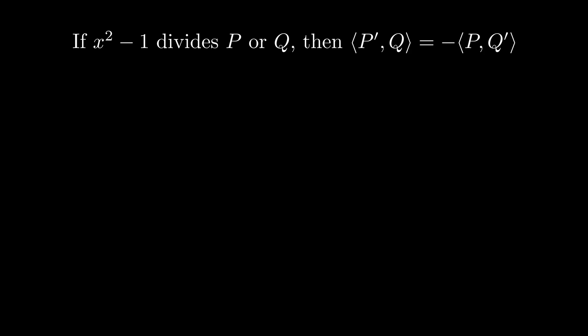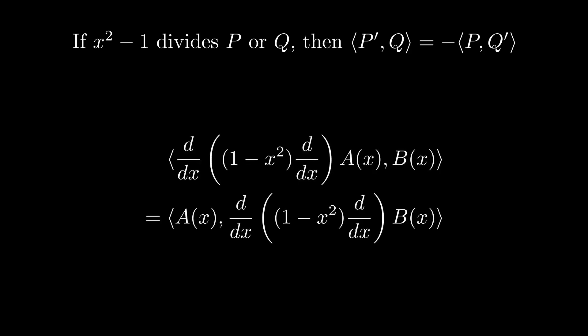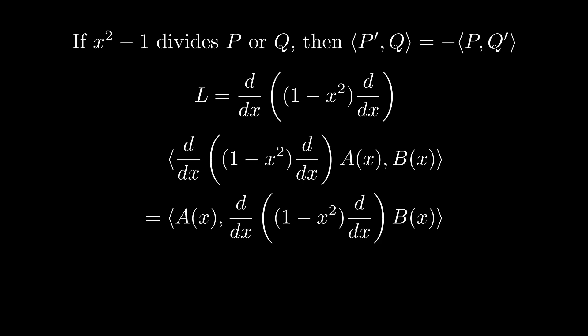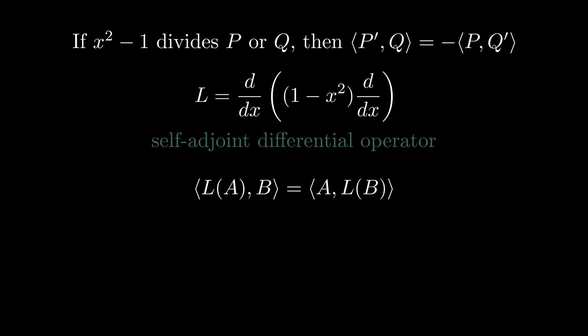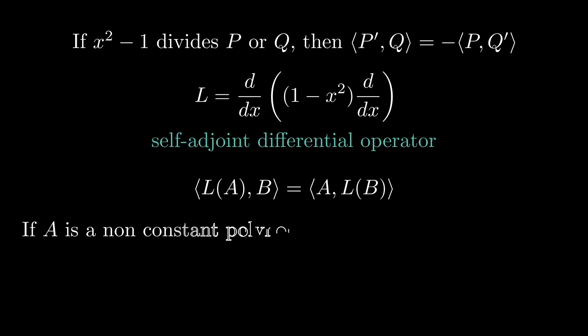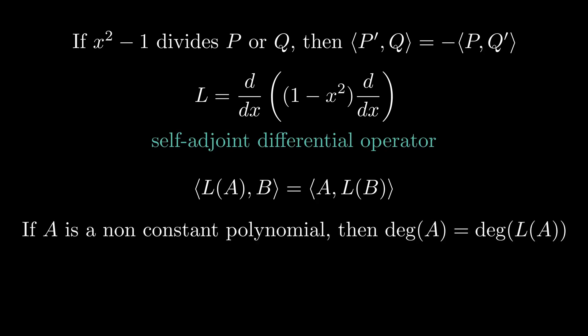Let's go back to our observation of the derivative in the inner product. If we differentiate, then multiply with 1 minus x squared, and then differentiate again, we are able to move the derivative twice. Let's call this operator L. L is a differential operator, so it takes one polynomial and returns another one. We have just shown that we can move L from one side to the other — operators with this property are called self-adjoint. When we pass a non-constant polynomial into L, we get a polynomial of the same degree, since differentiation lowers the degree by 1 and multiplication by 1 minus x squared increases the degree by 2.